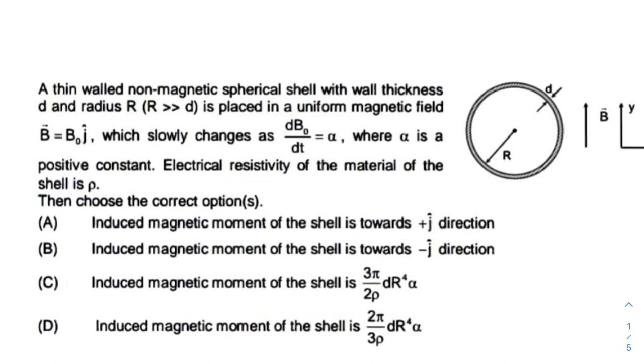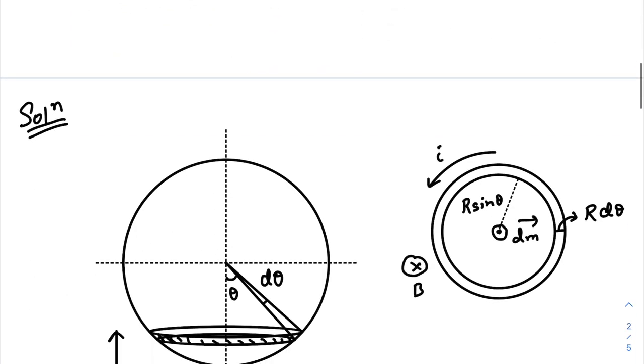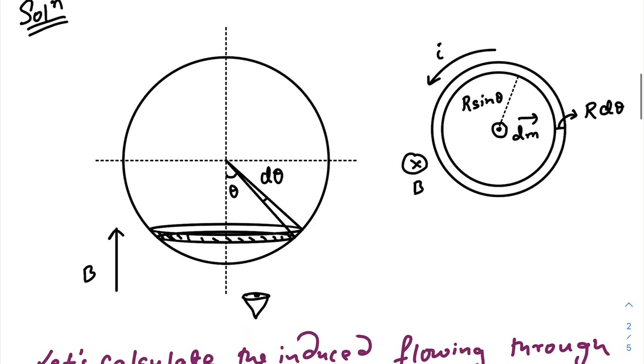So let's go to our solution. What do we have here? We have a non-magnetic thin spherical shell of very small thickness d. Now the magnetic field is directed along the positive y-axis. So of course, as it is a non-magnetic material, there will be some change in flux.